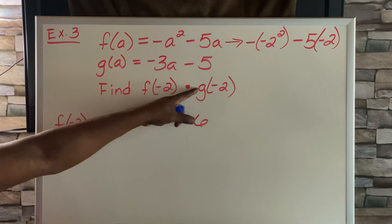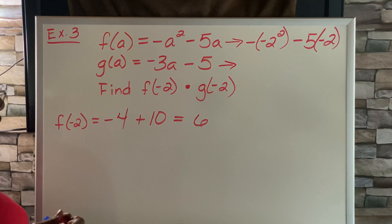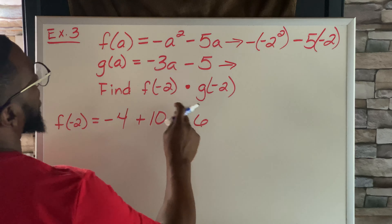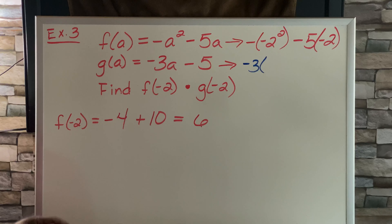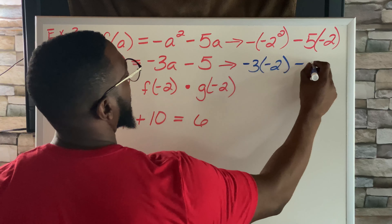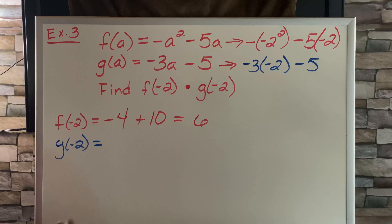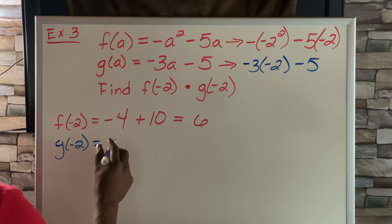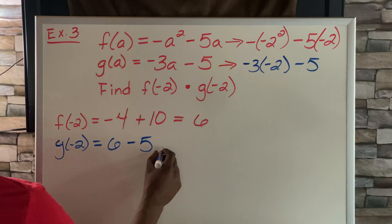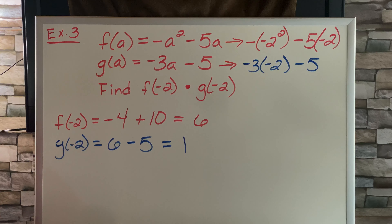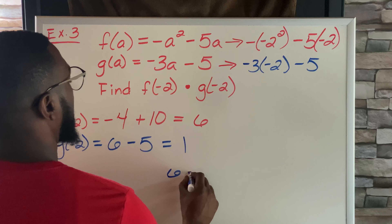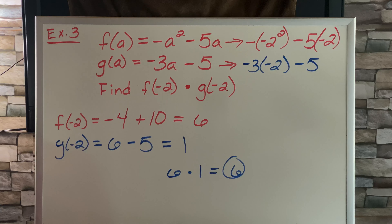For g of negative 2, we plug negative 2 into g of a: negative 3 times negative 2 minus 5, which gives 6 minus 5, equaling 1. Since our operation is multiplication, we say 6 times 1, which is 6.